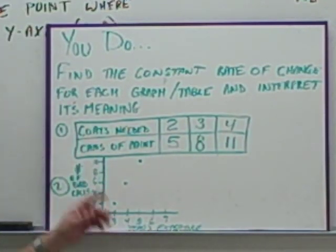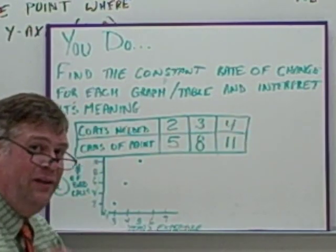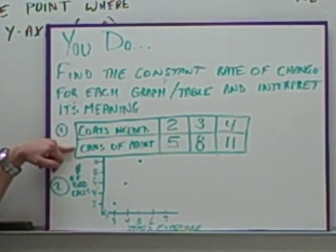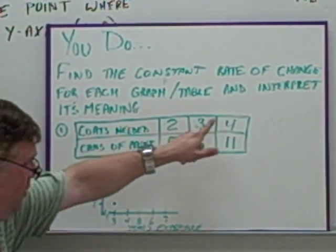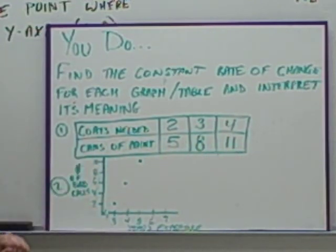Okay, getting back to the you do's here. We have to find the constant rate of change for each graph or table and interpret the meaning. Remember, interpret the meaning means write out the words. Now, since some of this is a little small, I'm going to read it off before asking you to pause. Coats needed, cans of paint. And it's 2, 3, 4 for the coats needed, 5, 8, 11 for the cans of paint.